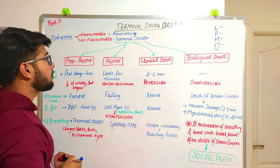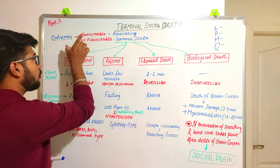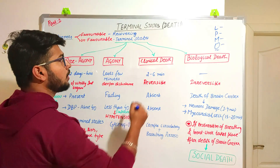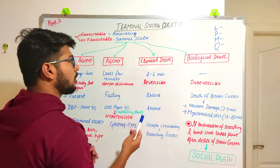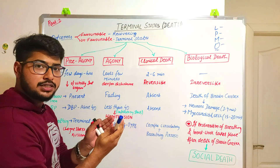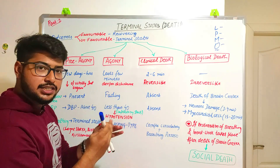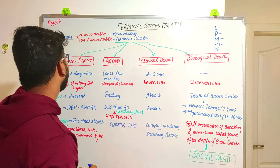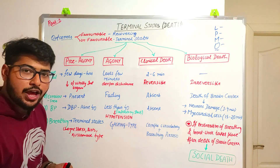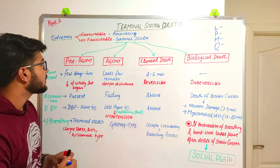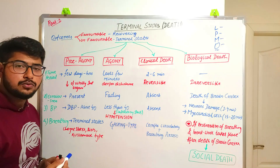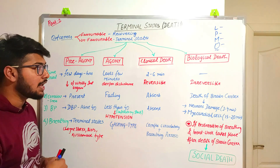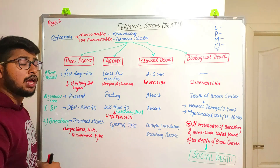Today we are going to discuss about the outcomes of a disease that lead to death — the terminal states or final conditions of death. Previously we discussed that outcomes can be favorable as well as unfavorable.